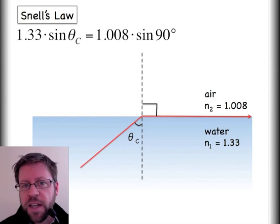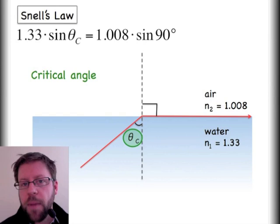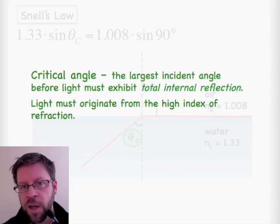Notice that I've also changed my theta one to say theta c. The c is for critical, and we now call this thing the critical angle. So that is, anytime I have my refraction on the low index of refraction—the air in this case—equal to 90 degrees on the other side, it has to be theta c, the critical angle. The critical angle is the largest angle of incidence that you can have before this thing has to start exhibiting total internal reflection.